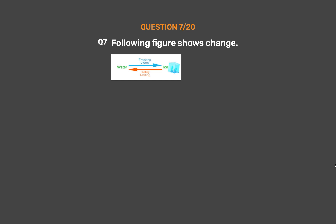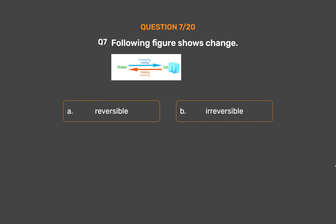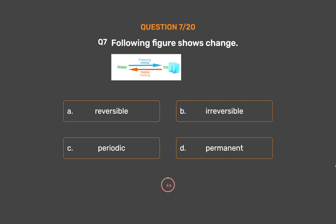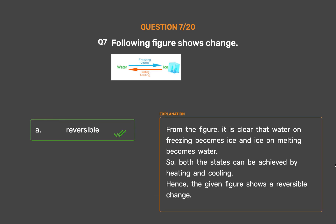Question number 7: The following figure shows what kind of change? Option A: Reversible. Option B: Irreversible. Option C: Periodic. Option D: Permanent. The correct answer is Option A, Reversible. From the figure, it is clear that water on freezing becomes ice and ice on melting becomes water. Both states can be achieved by heating and cooling. Hence, the given figure shows a reversible change.